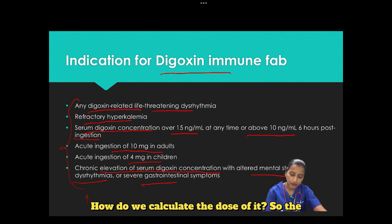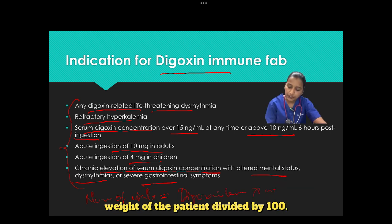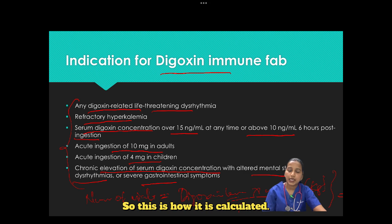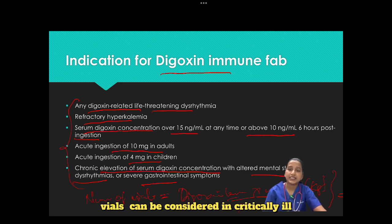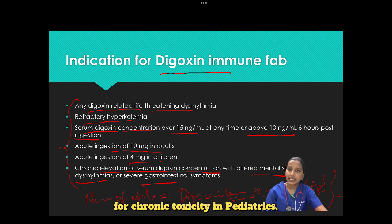The dose of digoxin immune fab is calculated as: number of vials equals serum digoxin level at steady state multiplied by the weight of the patient divided by 100. Empiric dosing is 10 to 20 vials for critically ill patients with acute overdose; 6 vials for chronic toxicity in adults; and 1 to 2 vials for chronic toxicity in pediatrics.